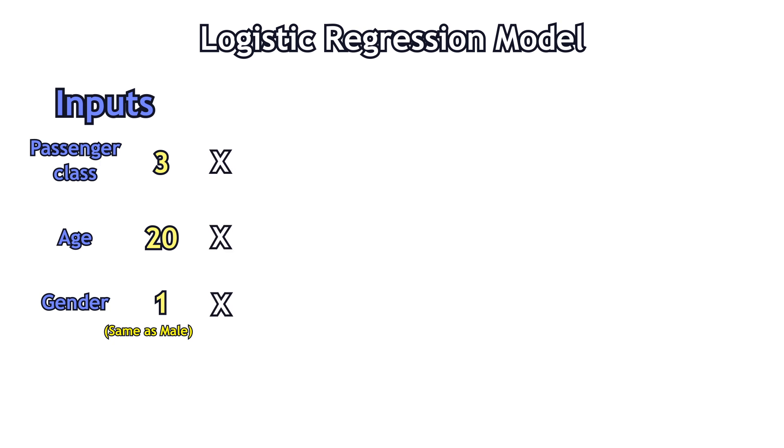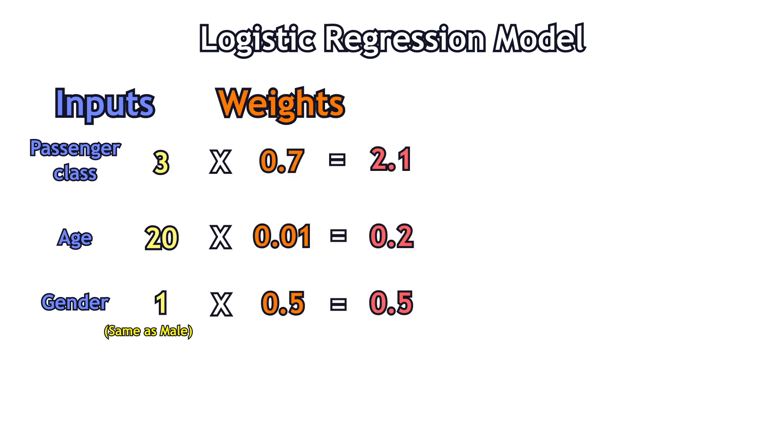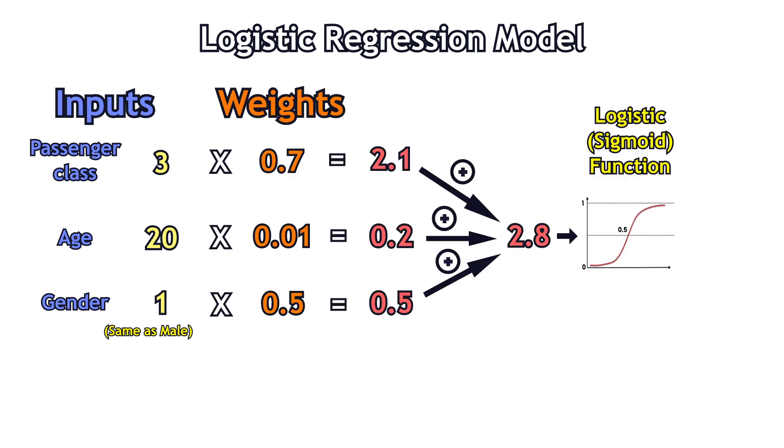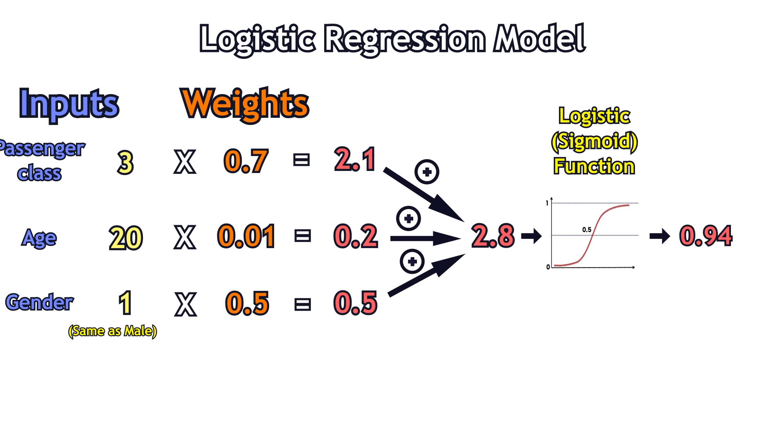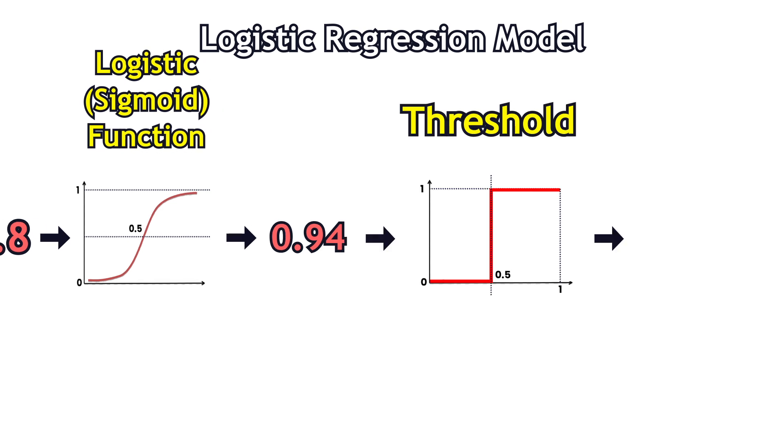This is a simple logistic regression model. Inputs are multiplied with their corresponding weights. They are then summed up. A logistic function squeezes those numbers into a scale of 0 to 1. A threshold is then applied to produce a prediction.